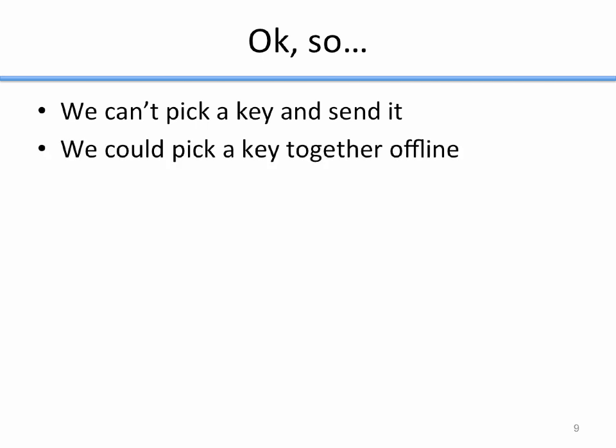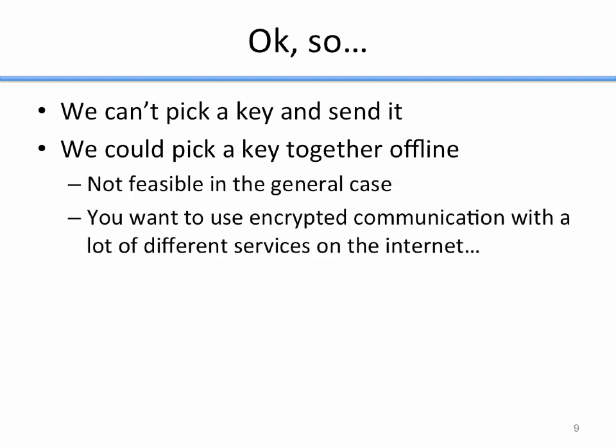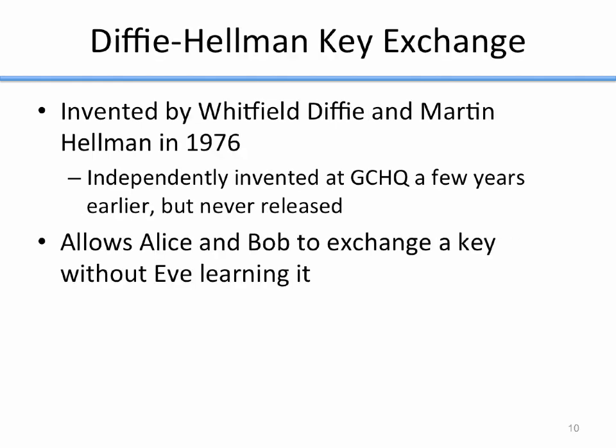We can't pick a key and send it. We could pick a key together offline — Alice and Bob could get together in some secret place in person and exchange keys. But this just is not feasible in the general case, because there are too many people that you want to do encrypted communication with, especially on the internet. So that's not a good option. Our solution is the Diffie-Hellman key exchange.